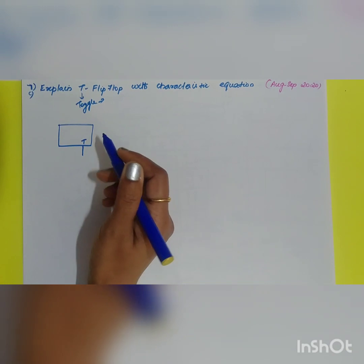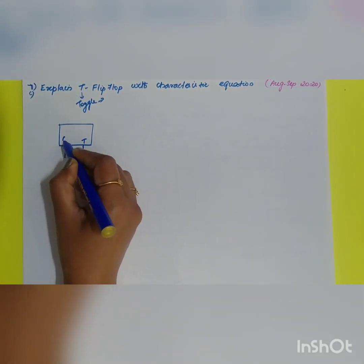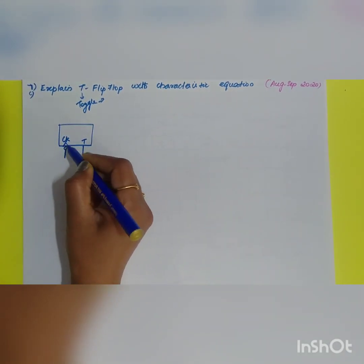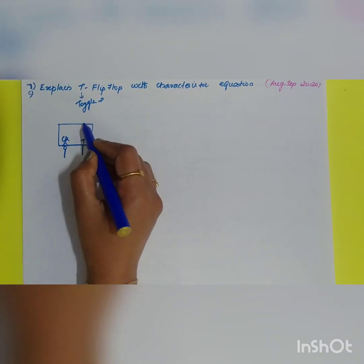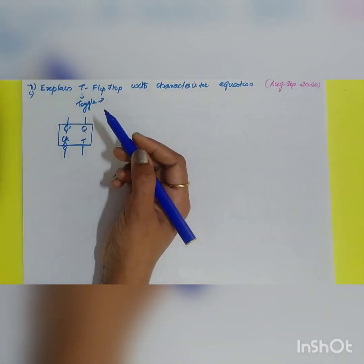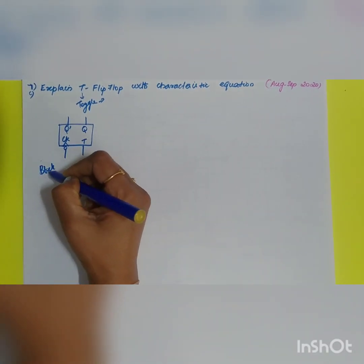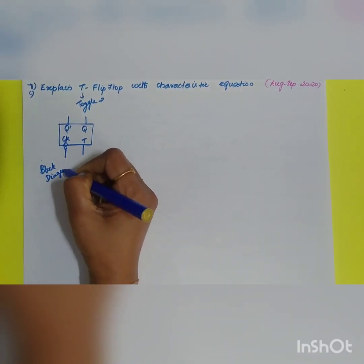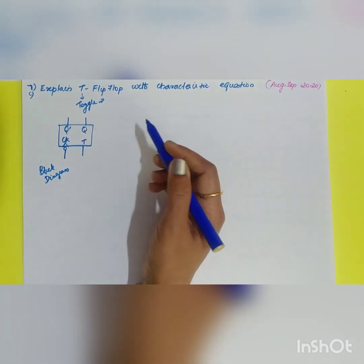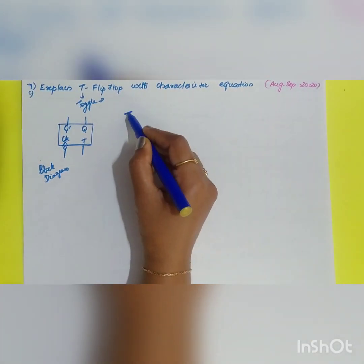The inputs are: one input called T, and the other input is the clock signal, which is negative-edge triggered. The outputs are Q and its complement Q dash. This is your block diagram of the T flip-flop.